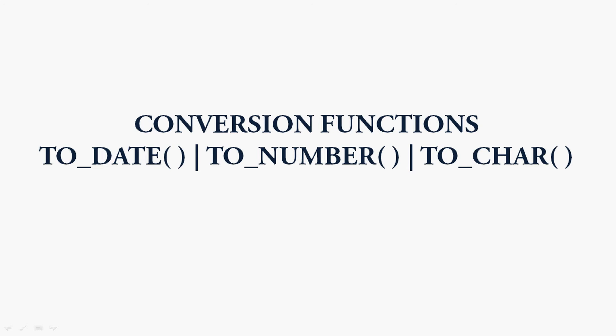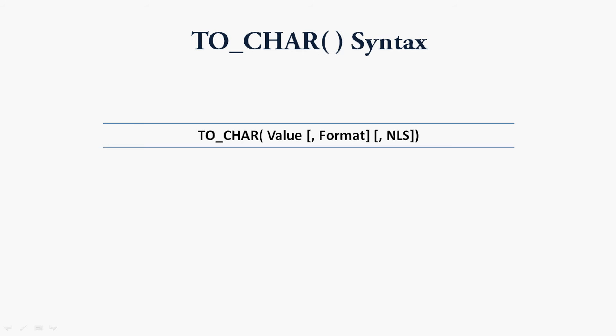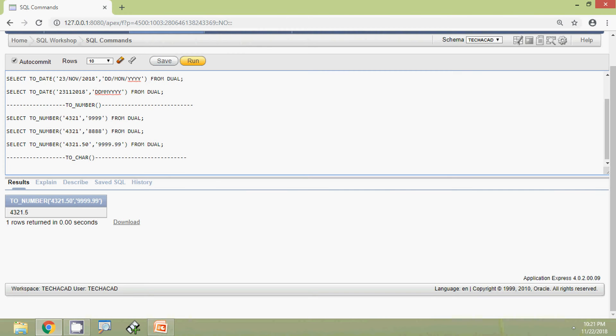Now we will come to the next conversion function, that is TO_CHAR. This function TO_CHAR converts any values such as date or number to a string. Here we can see the syntax: TO_CHAR of value, then two optional parameters such as format and NLS. We will go through some examples so that it will be more clear.